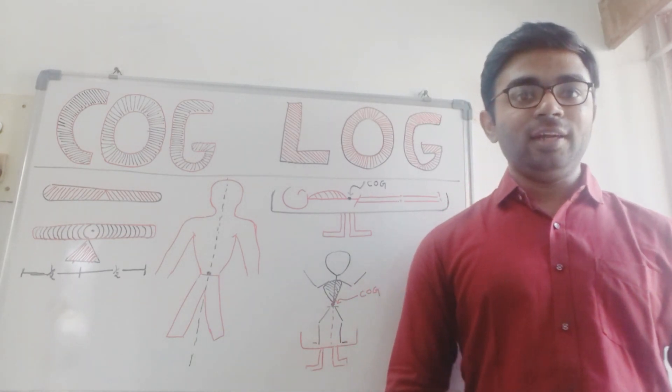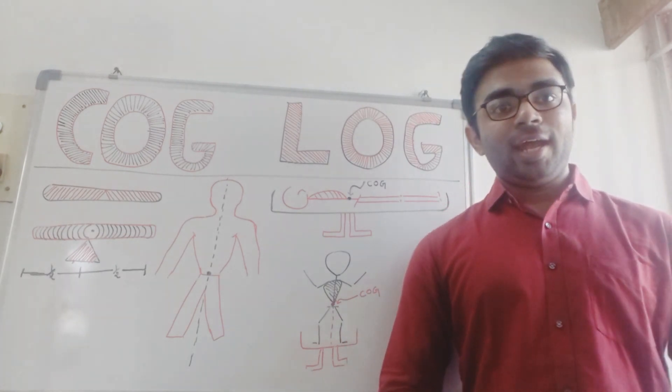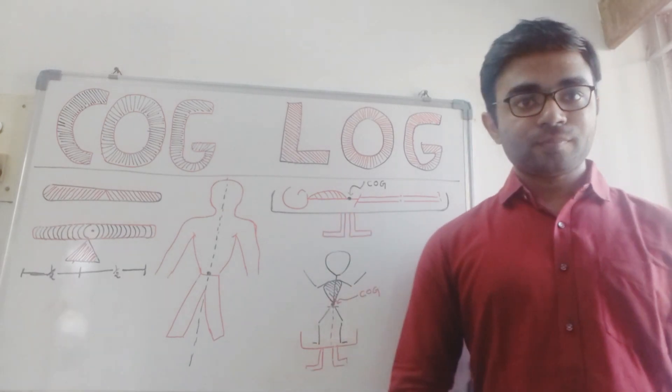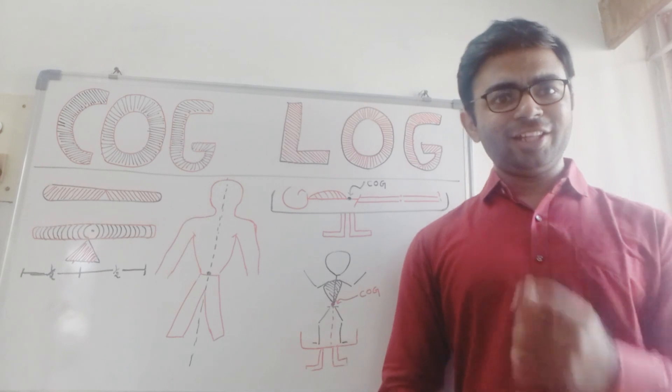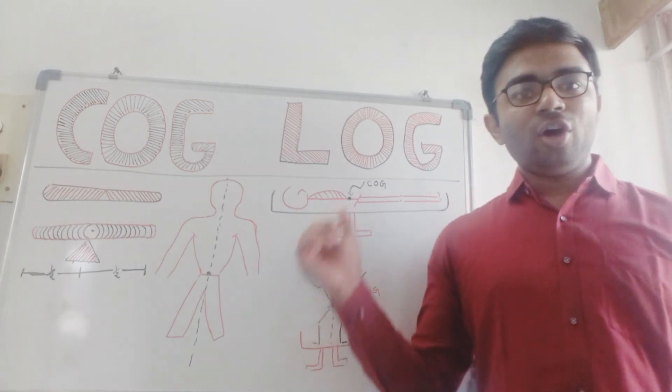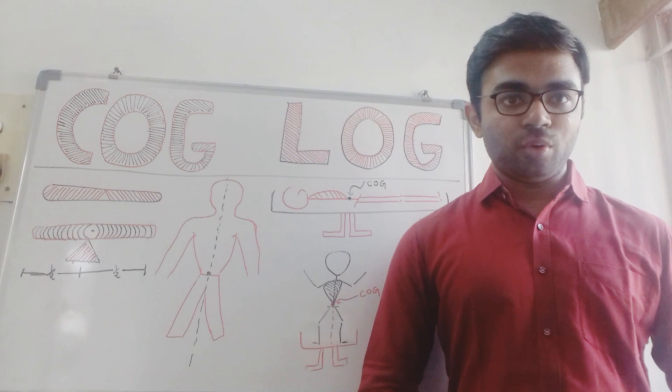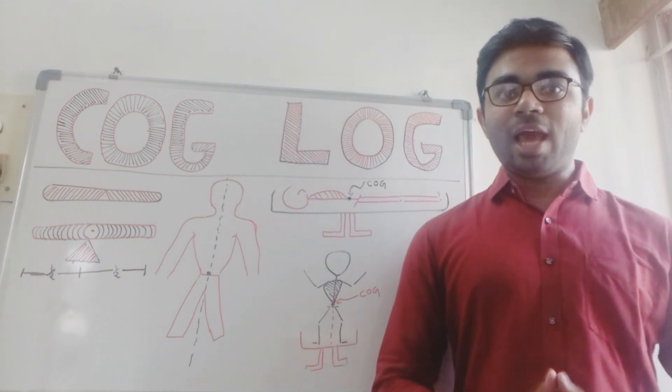In this example, we have a tilt table with a pivot point. We instruct a person to lie down in a supine lying position with a condition that none of the ends of this tilt table should be touching the ground. Initially, what will happen?